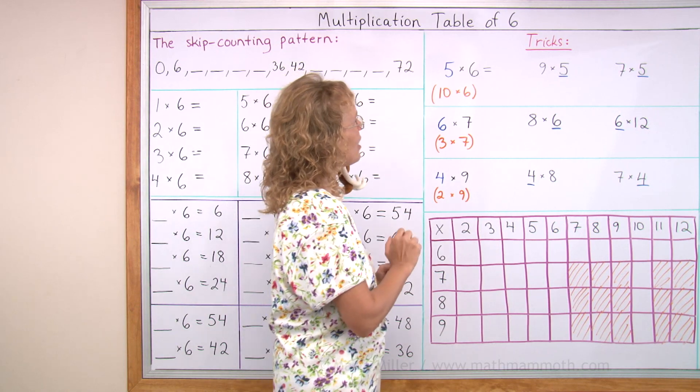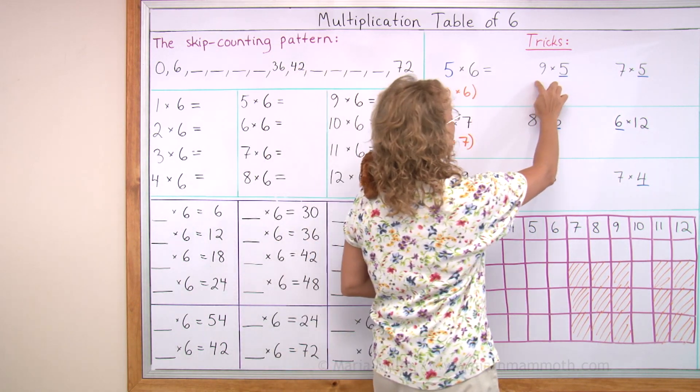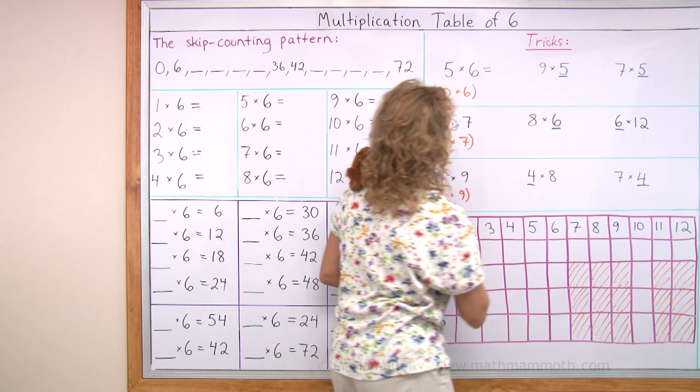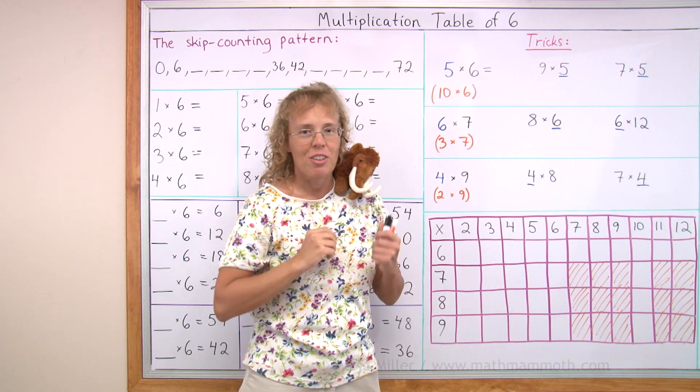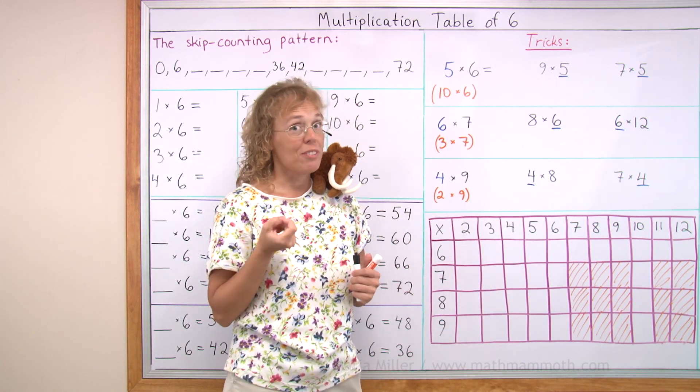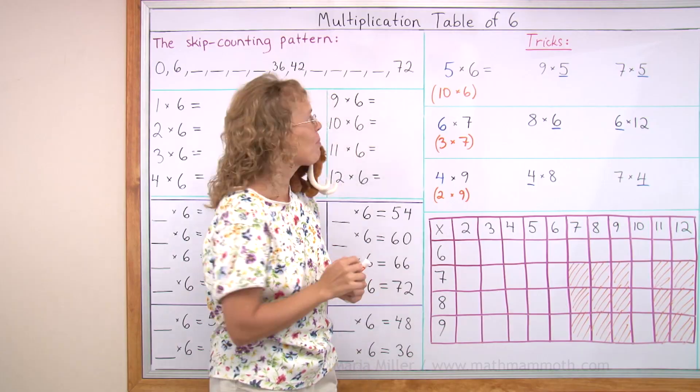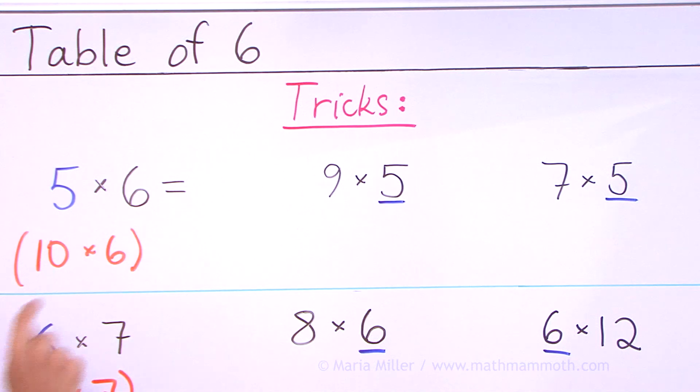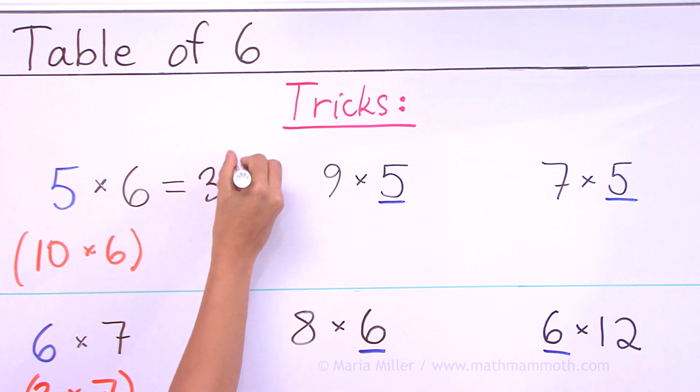First we're looking at the table of 5. I have 5 times 6 and then 9 times 5, 7 times 5. You can think of the corresponding problem in the table of 10 and take half of that. So 5 times 6, you can think of 10 times 6 which is 60 and then take half of that. That is 30.